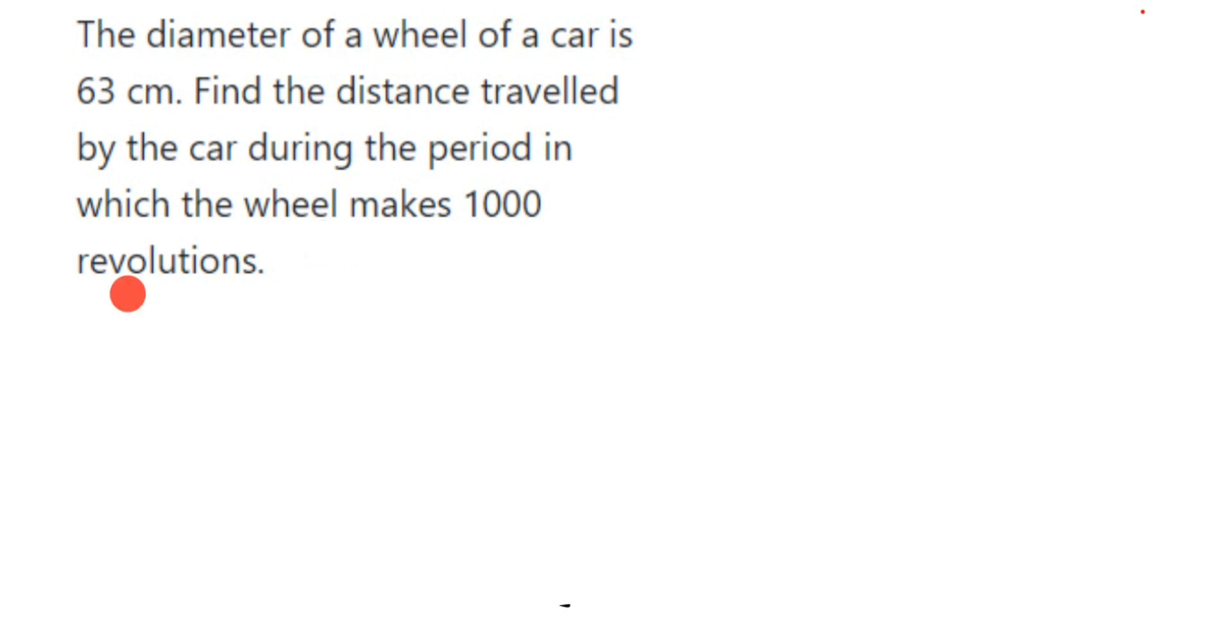Now what is given here? We have given that diameter of a wheel of a car is 63 cm. They are saying to find out the distance traveled by a car during the period where the wheel rotates a thousand times, then how much distance it has covered.